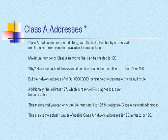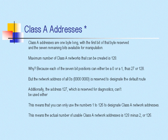A Class A address, by default, is one byte long — one octet — with the first bit of that byte reserved and the seven remaining bits available for manipulation. Therefore, the maximum number of Class A networks that can be created is 128, because each of the seven bit positions can either be zero or one — thus 2 to the 7th, or 128. But the network address of all zeros is reserved to designate the default route, and the address of 127 is reserved for diagnostics. This means you can only use 1 through 126, giving 128 minus 2, or 126 usable Class A network addresses.